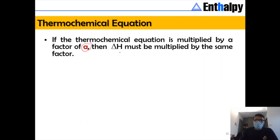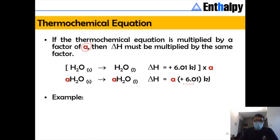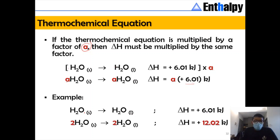If the thermochemical equation is multiplied by a factor 'a', then ΔH must also be multiplied by the same factor. For example, H₂O(s) → H₂O(l) has ΔH = +6.01 kJ/mol. If you multiply by two, the entire thermochemical equation is multiplied by two, and the enthalpy value becomes 2 × 6.01 = +12.02 kJ/mol.